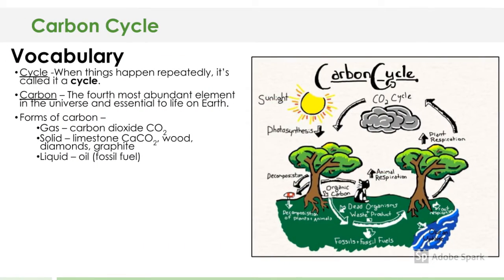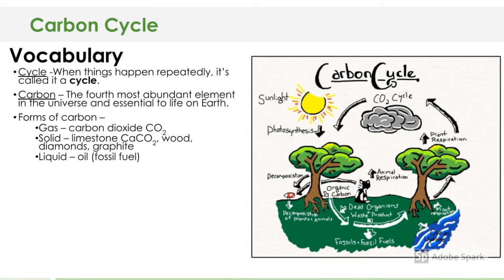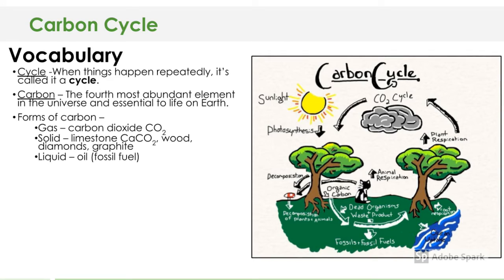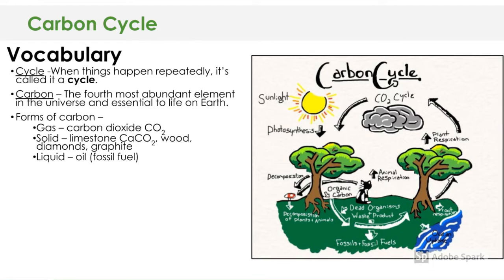As we've progressed through this unit, it is important that you know a couple of important key terms. A cycle is when things happen repeatedly — they come around over and over again, essentially in a circle, like you created in the Explore It station.